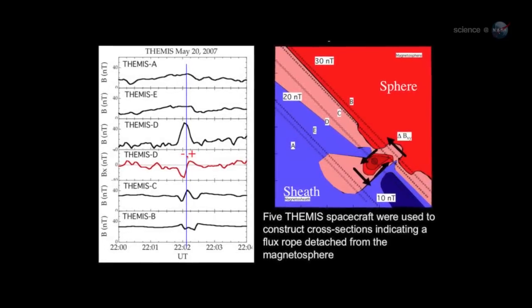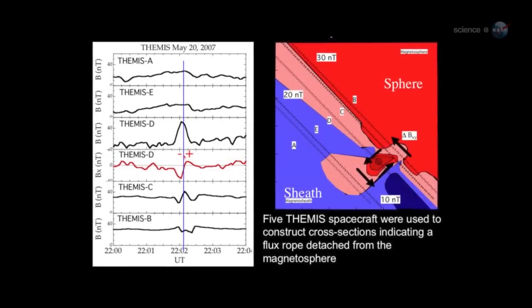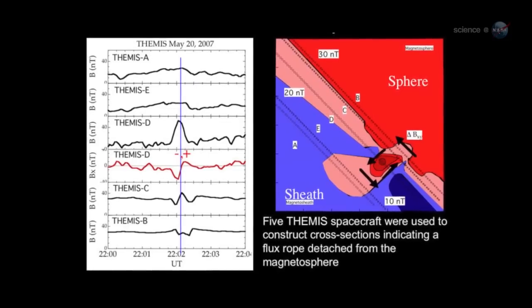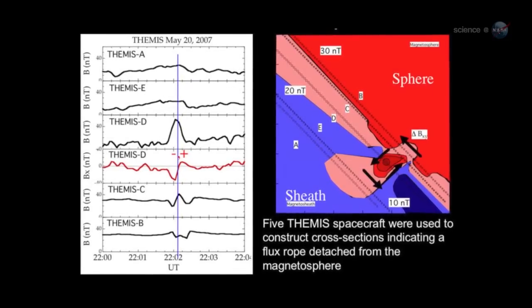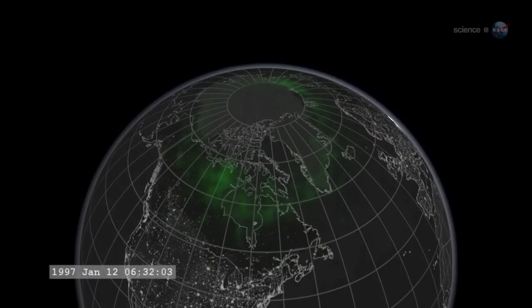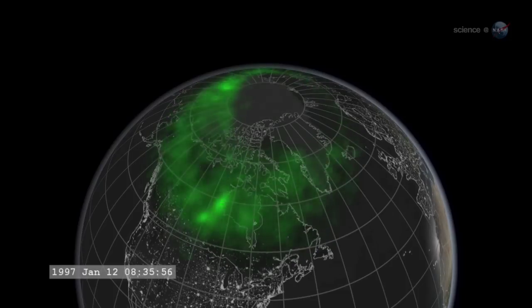Most portals are small and short-lived. Others are yawning, vast, and sustained. Energetic particles can flow through the openings, heating Earth's upper atmosphere, sparking geomagnetic storms, and igniting bright polar auroras.